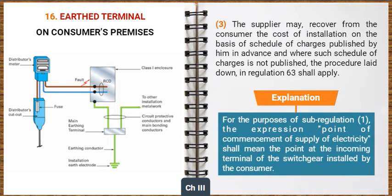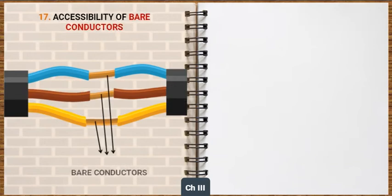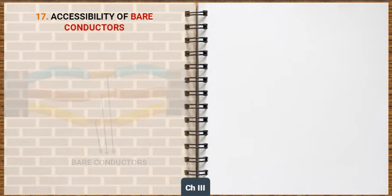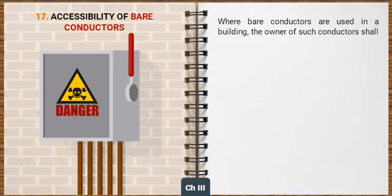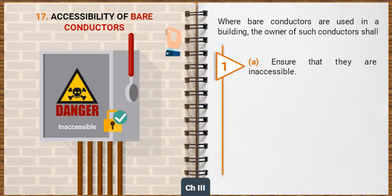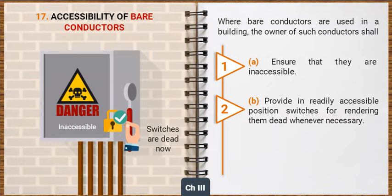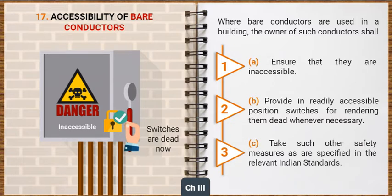For the purposes of sub-regulation 1, the expression 'Point of commencement of supply of electricity' shall mean the point at the incoming terminal of the switchgear installed by the consumer. Now let's learn about the general safety requirements for accessibility of bare conductors. Where bare conductors are used in a building, the owner shall ensure that they are inaccessible, provide readily accessible switches for rendering them dead whenever necessary, and take such other safety measures as are specified in the relevant Indian standards.